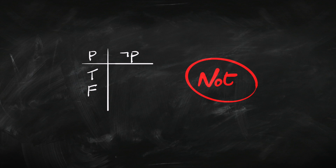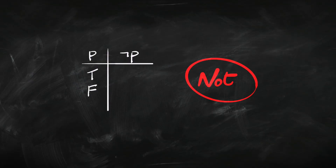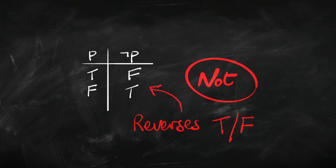Starting with the easiest: not. Not basically just means we reverse the truth value. If we take a true sentence, its negation — the not version — is false. And if we take a false sentence, then negating it, putting not in front of it, will give us a true sentence. If we're interested in not-P and P is true, then not-P is going to be false. And if P is false, not-P is going to be true. Not reverses the truth value — we change it from a T to an F or an F to a T.